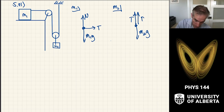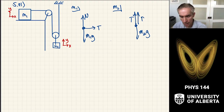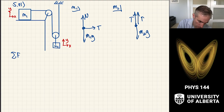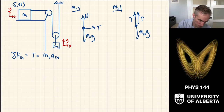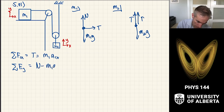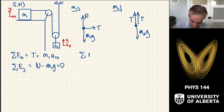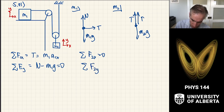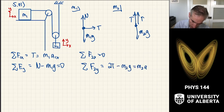We jot down a coordinate system, calling this x and y. Then we write down F equals ma. The sum of the forces in the x direction for mass 1 is just the tension force, and that's M1 times A1 in the x direction. The sum of the forces in the y direction for M1 is N minus M1g equals zero — turns out not to be very useful. For block two in the x direction, there are no forces, so it's zero. For two in the y direction, that is 2T minus M2g equals M2 times A2y.